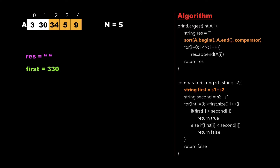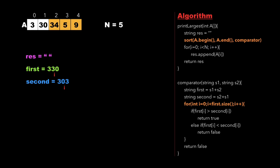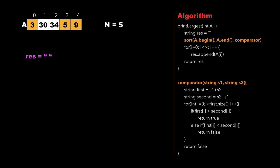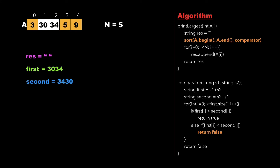We run a for loop where we compare character by character of both the strings — we compare whether 3 is greater than 3. Since 3 equals 3, we compare the second character where 3 is greater than 0, therefore the first string is greater than the second string and we return true. That is, we do not swap these two numbers in array A. Similarly we call the comparator function for the next two numbers 30 and 34, and we calculate the value of first and second as 3034 and 3430.